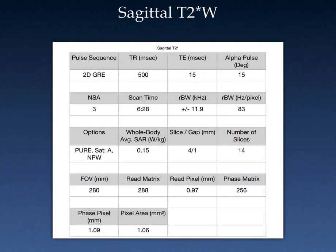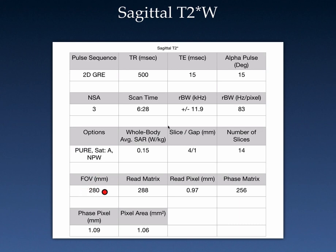For the bright fluid sequence, we chose a 2D gradient echo — a T2 star weighted sequence — with TR 500, TE 15, 15 degree flip angle, 3 signal averages. That gave us the same scan time as the T1: 6 minutes and 28 seconds, and the whole body average SAR was 0.15 watts per kilogram. We maintained the same slice thickness and gap — 14 slices — and similar spatial resolution: 280 field of view, 288 read, 256 phase, giving a pixel area of 1.06 millimeters squared.